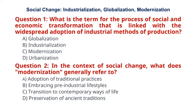Question 1. What is the term for the process of social and economic transformation that is linked with the widespread adoption of industrial methods of production? A. Globalization. B. Industrialization. C. Modernization. D. Urbanization. The correct answer for question 1 is option B: Industrialization.